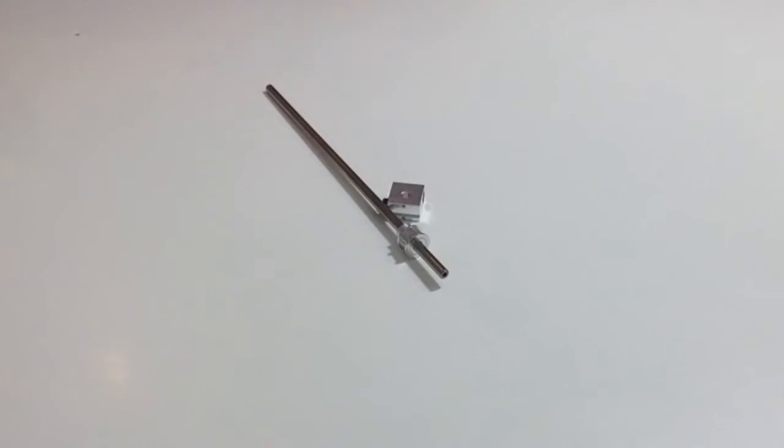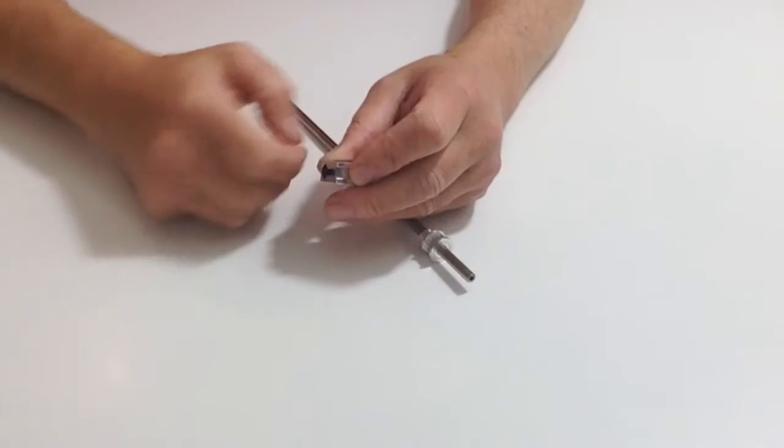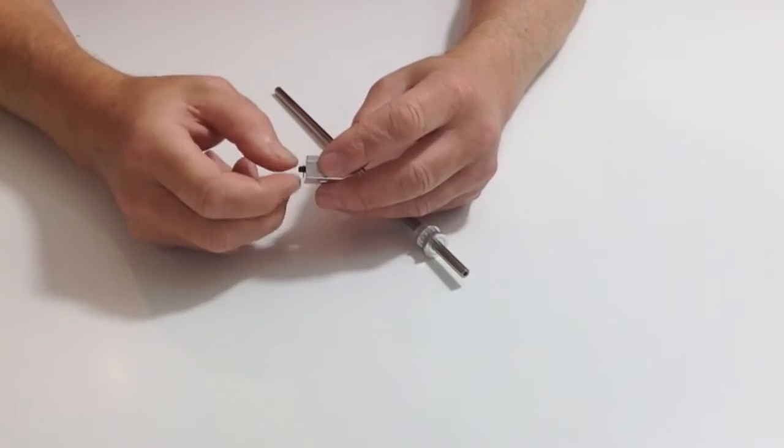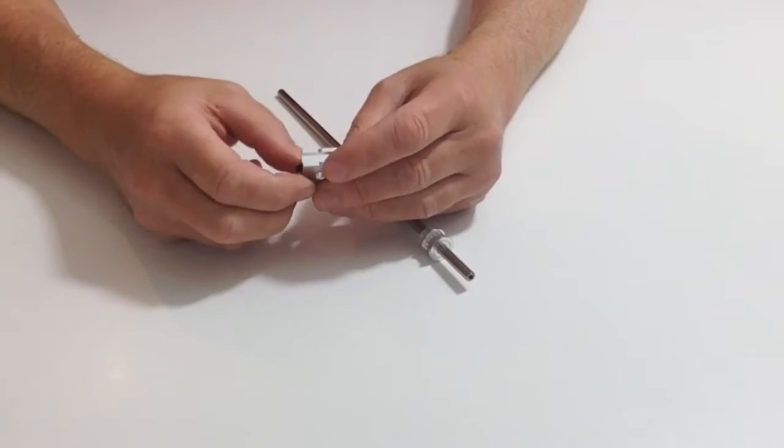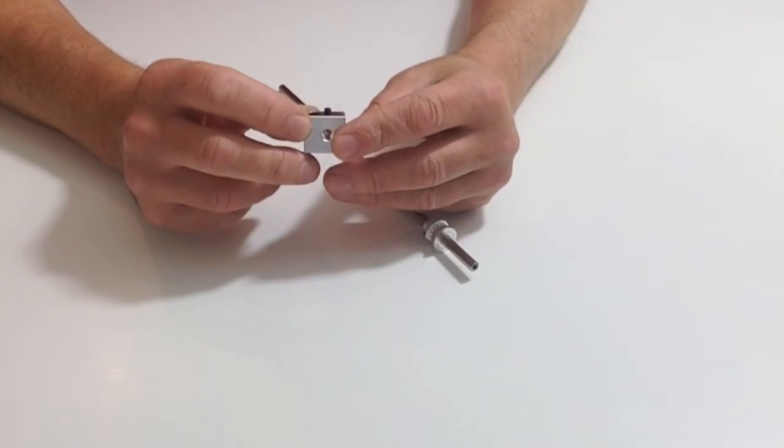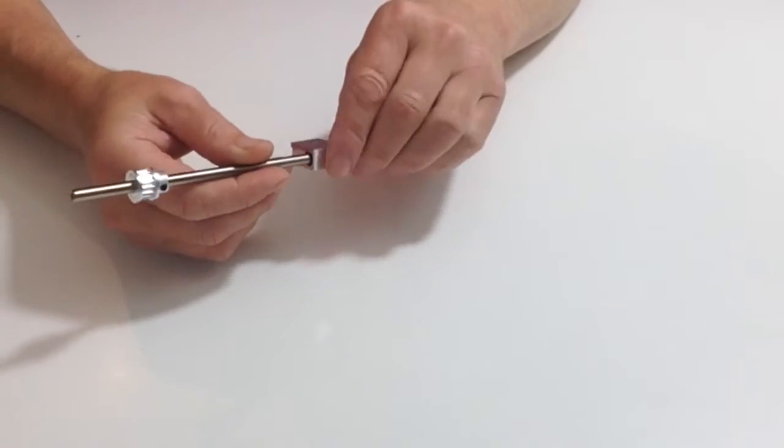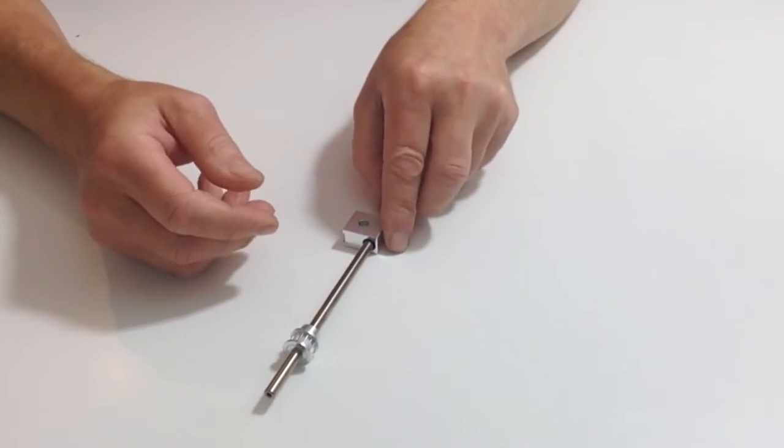In stage 22 you get the slider and an M4 set screw which is 8mm. As before, place the 8mm M4 set screw into the slider so that it's sticking out just a little bit and then place that over the shaft and put that aside for future stages.